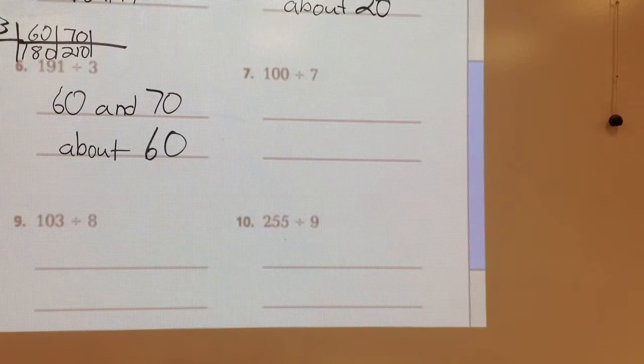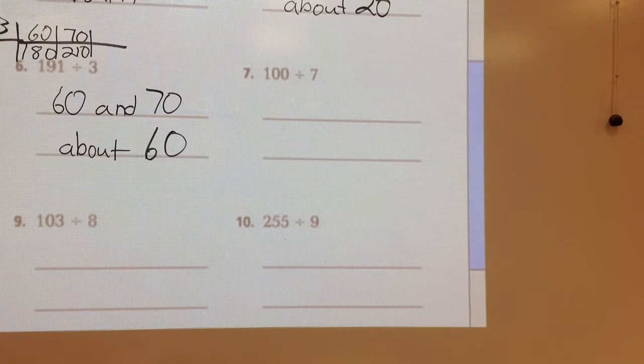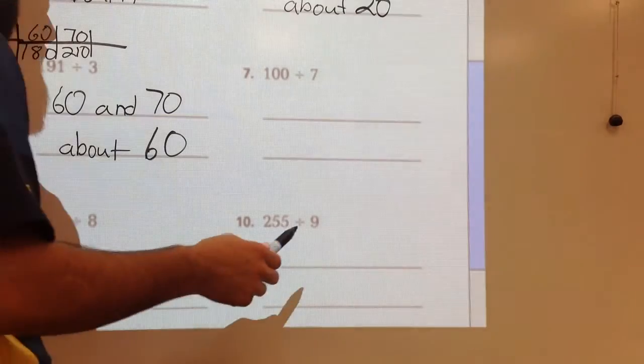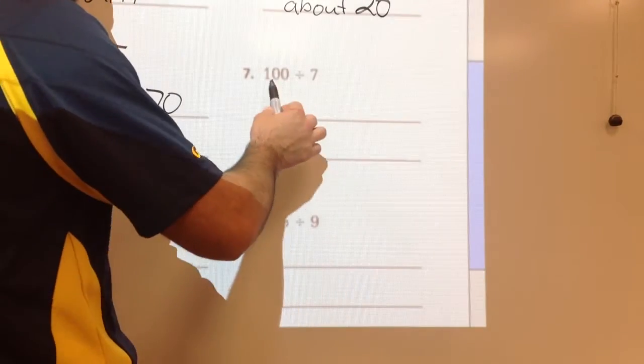Okay, we're doing 100 divided by 7 using estimated quotients using models. So we have 100 divided by 7.